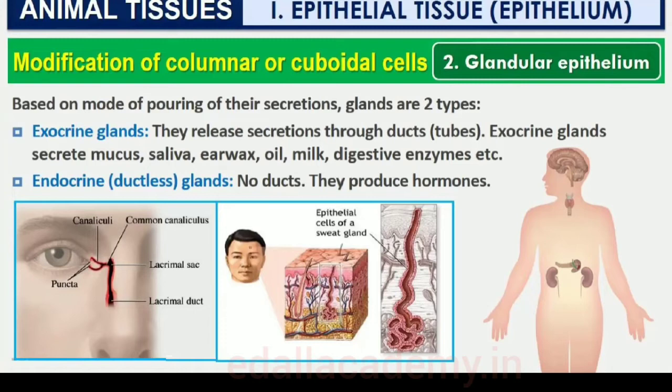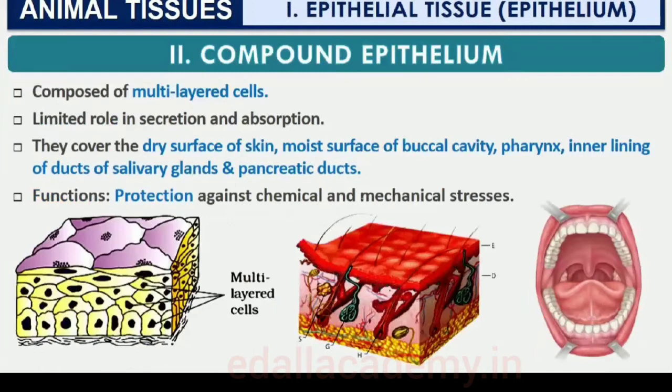Compound epithelium is made of more than one layer of cells and thus has a limited role in secretion and absorption. Their main function is to provide protection against chemical and mechanical stresses. They cover the dry surface of the skin, the moist surface of the buccal cavity, pharynx, inner lining of ducts of salivary glands and of pancreatic ducts.